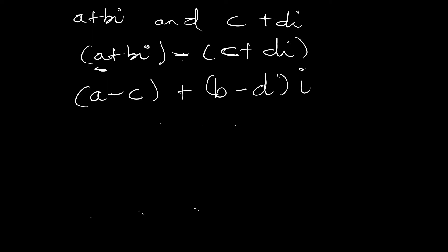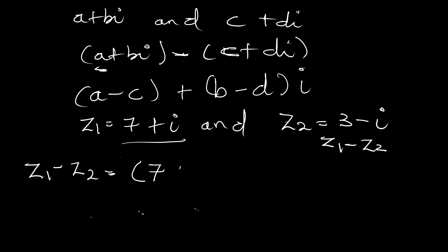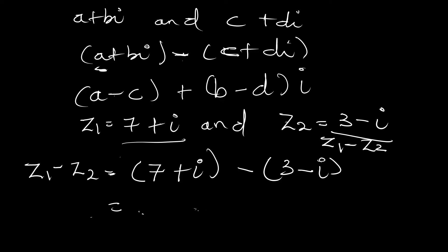Given z1 = 7+i and z2 = 3-i, we are asked to evaluate z1-z2. In subtraction we subtract the real parts from the real parts and the imaginary parts from the imaginary parts.